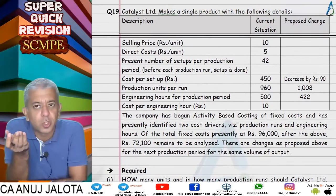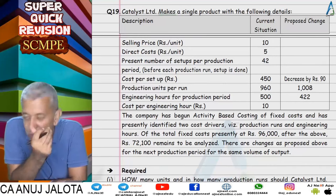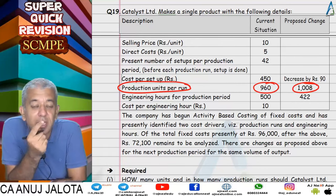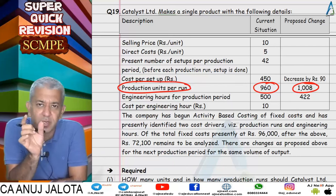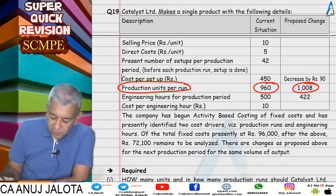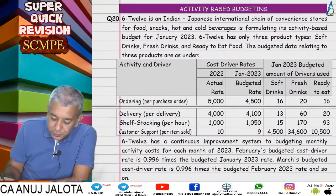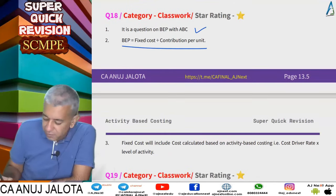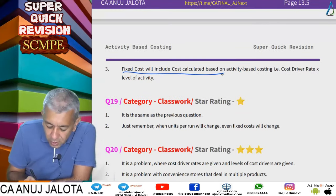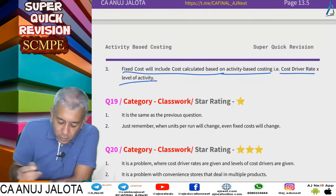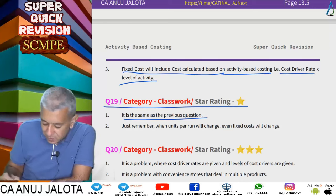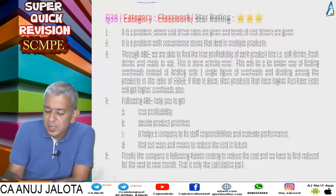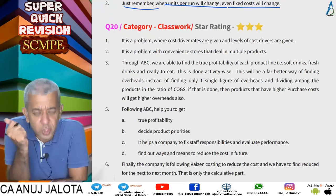Question 19 was almost the same as question 18 — another breakeven point with ABC. The important note here: if the number of units per production run changes, then the number of setups will also change. Changed number of setups means changed setup cost, which means the total fixed cost changes. Compute the revised fixed cost accordingly, then divide by contribution per unit. The general formula: fixed cost includes cost driver rate × level of activity for each overhead pool.